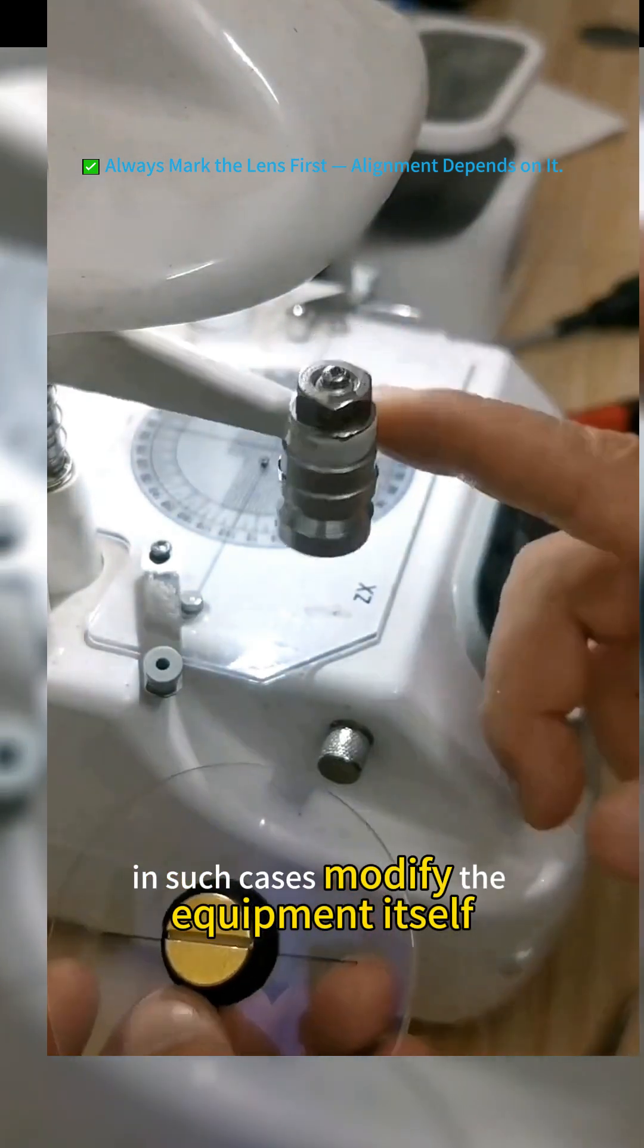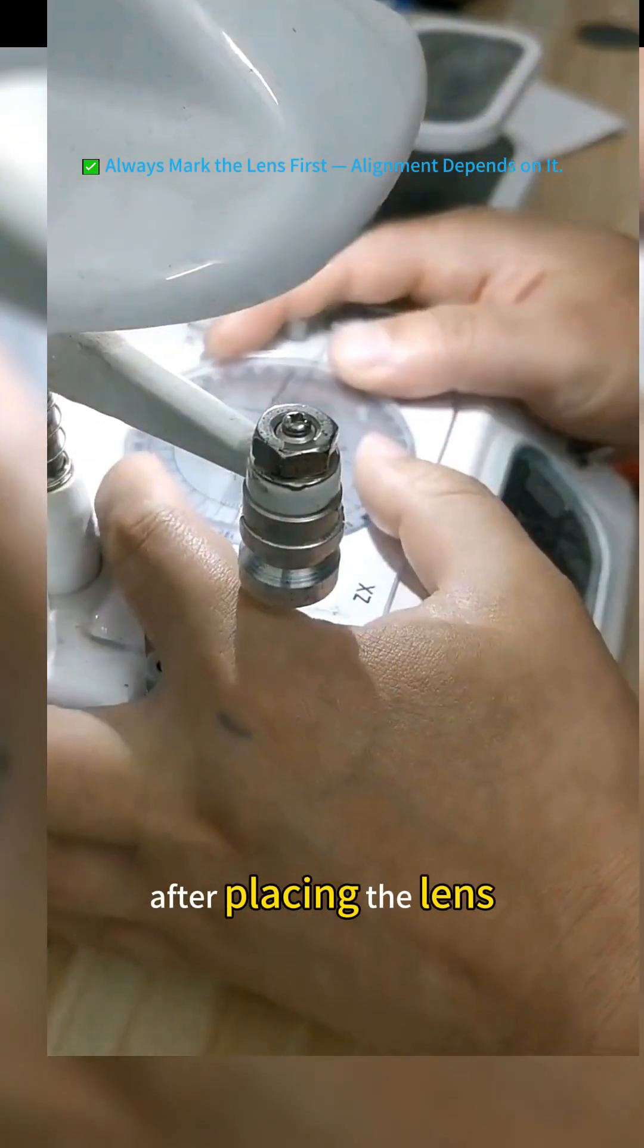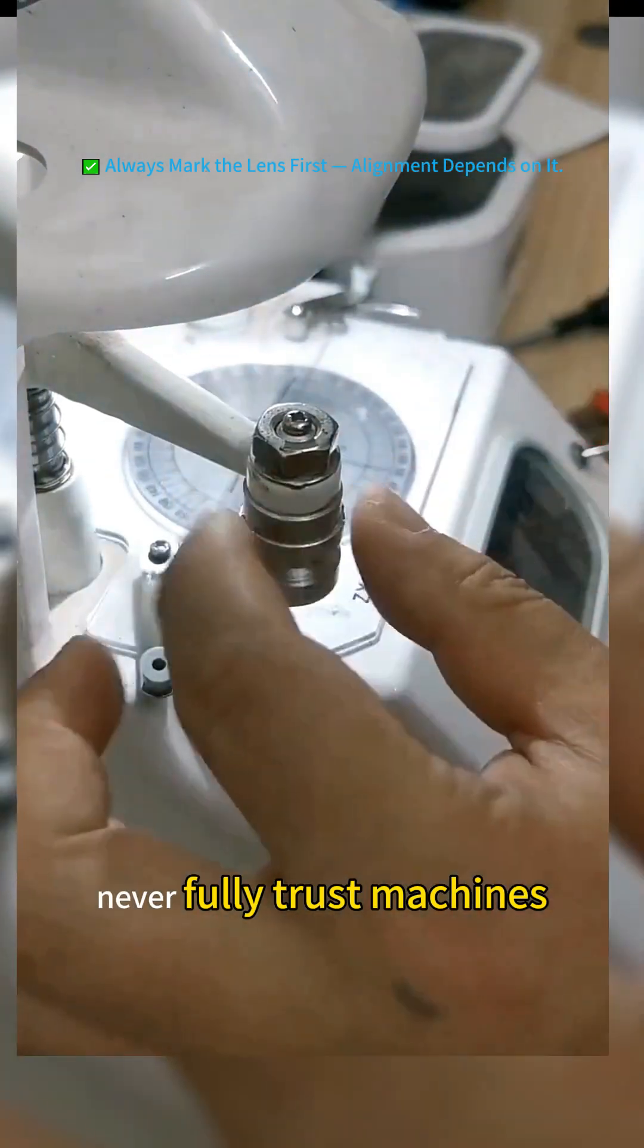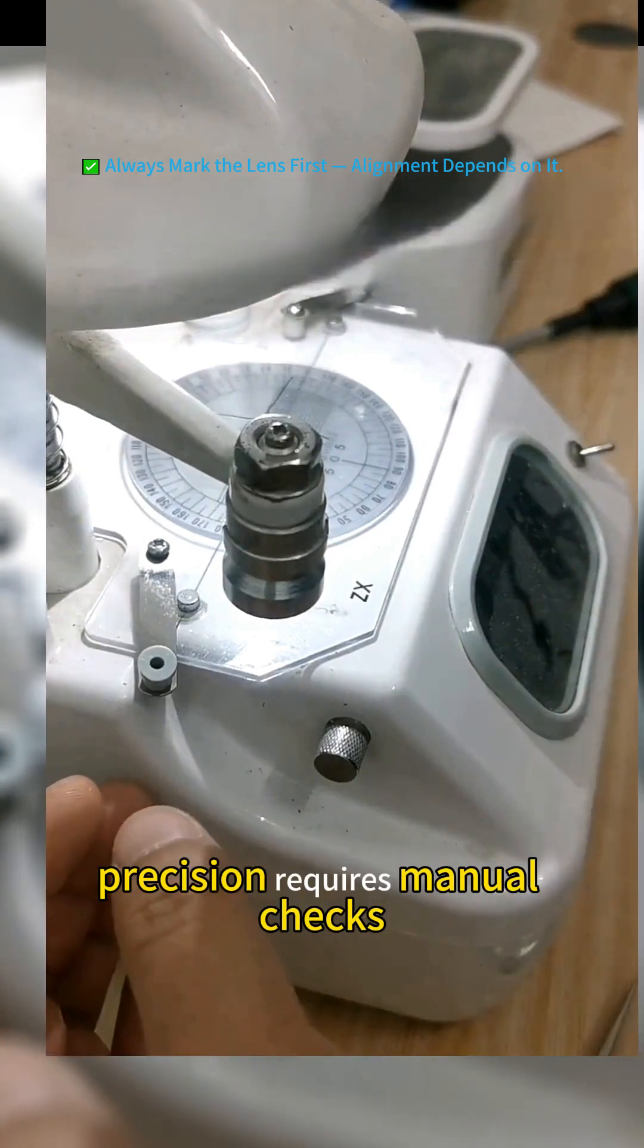In such cases, modify the equipment itself. First step remains, apply alignment markings. After placing the lens, never fully trust machines. Human oversight is key. Precision requires manual checks.